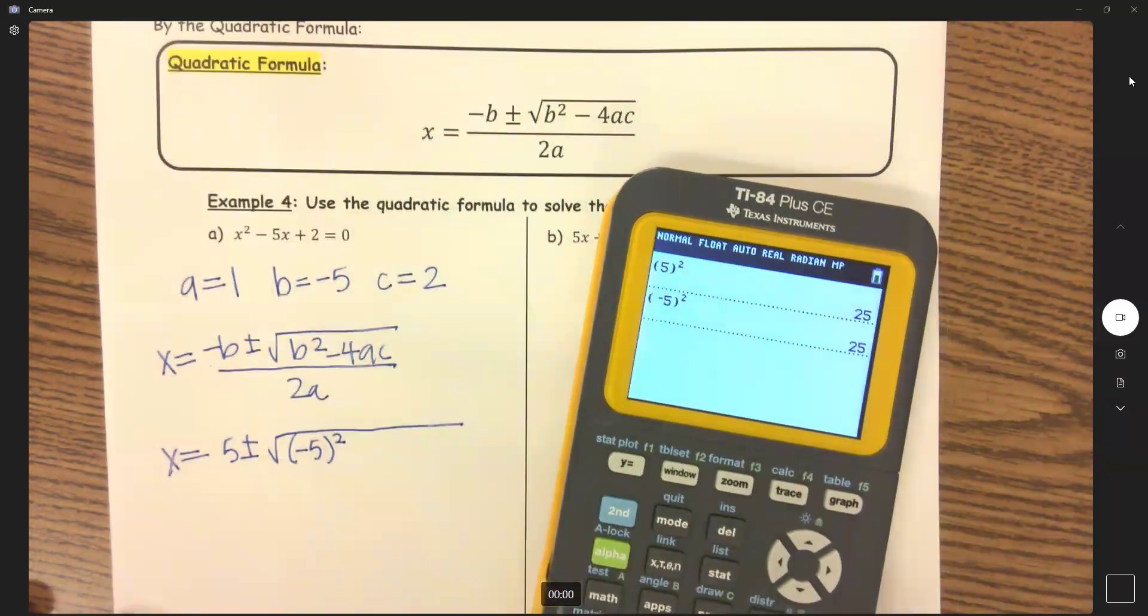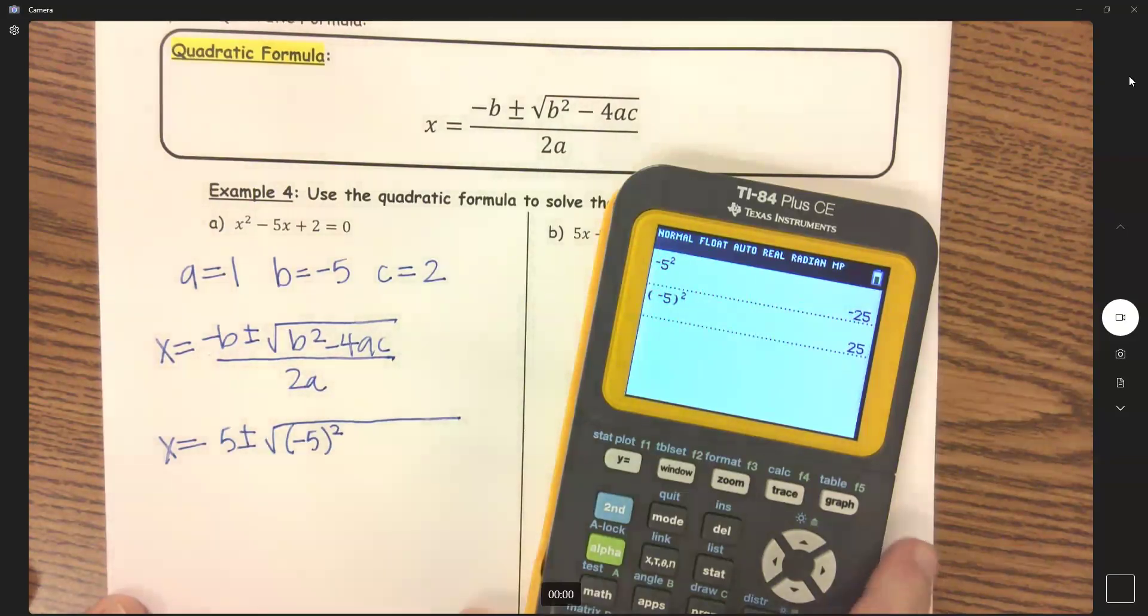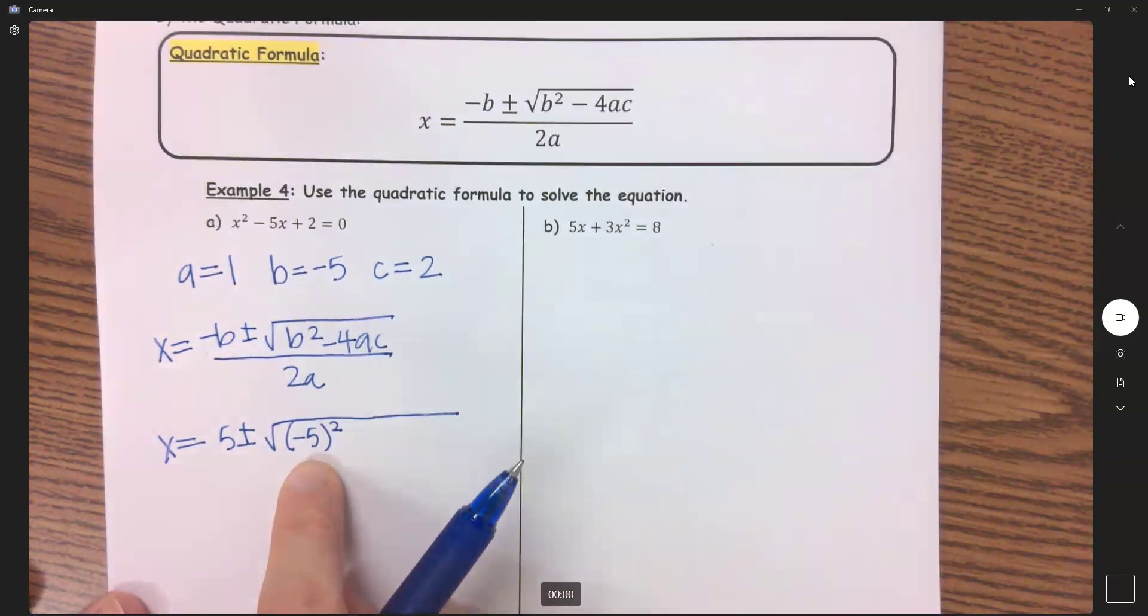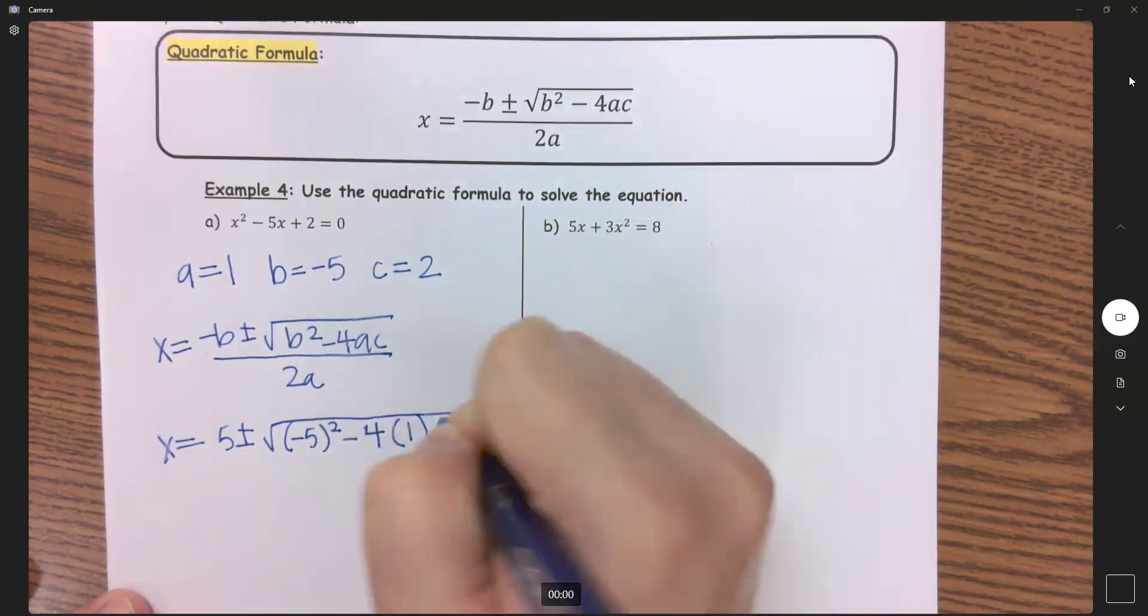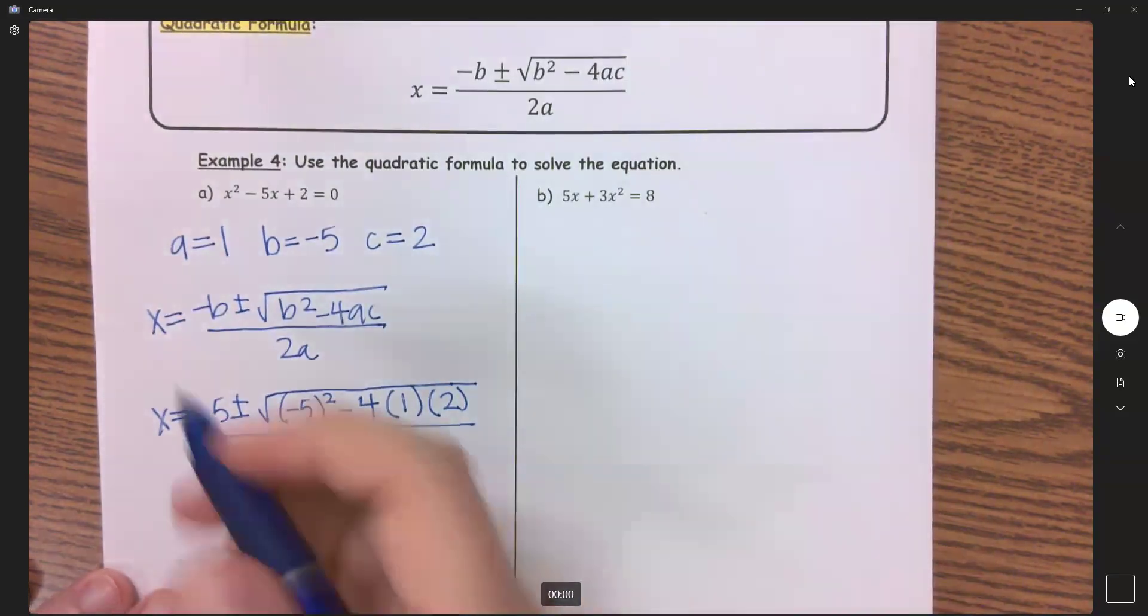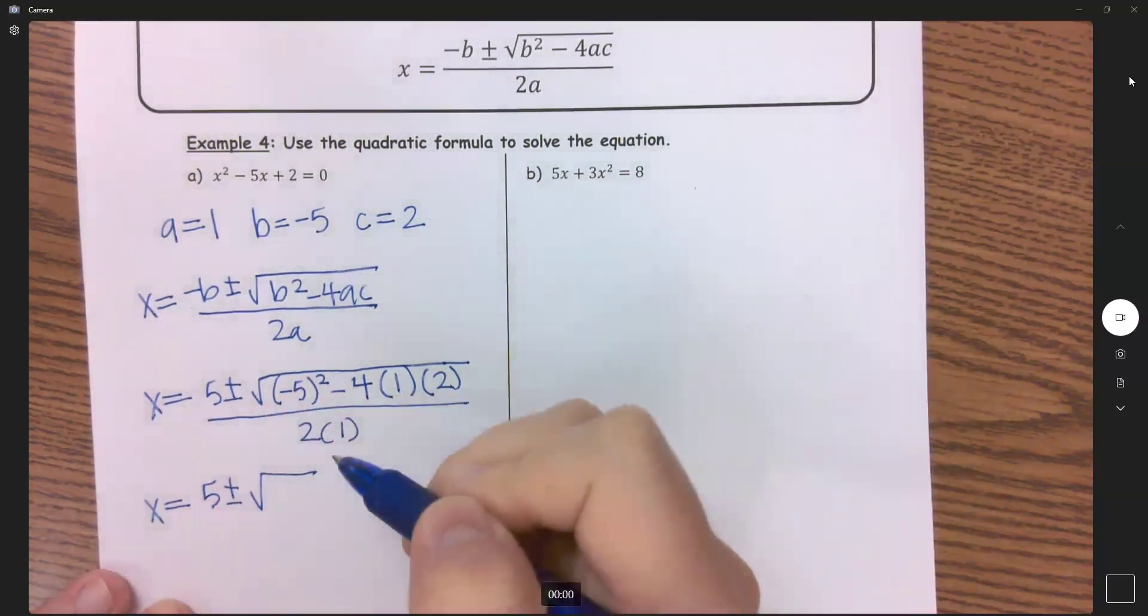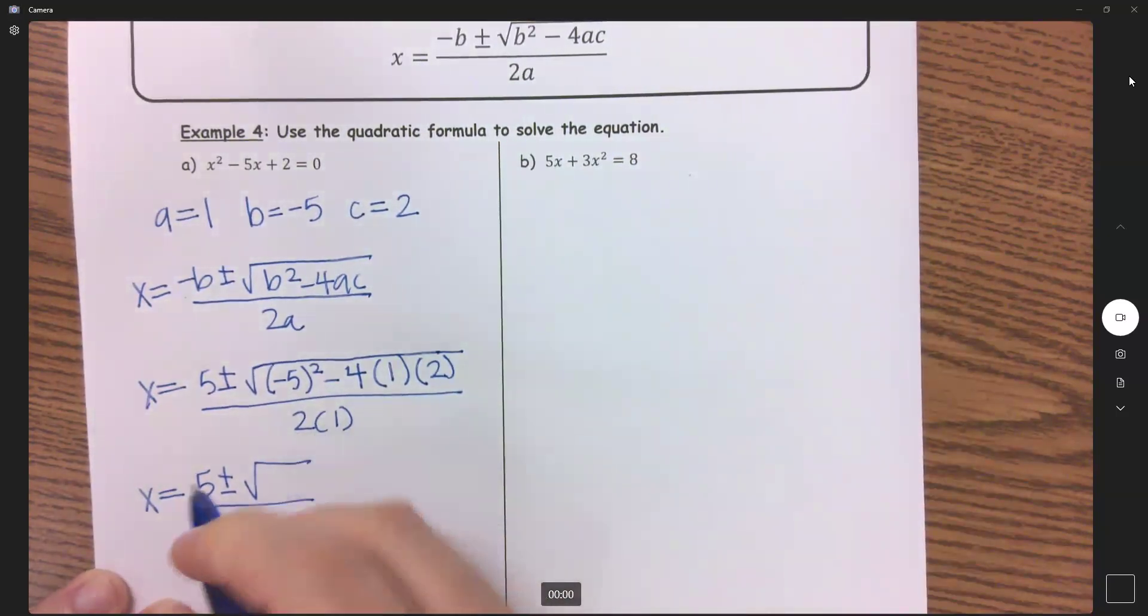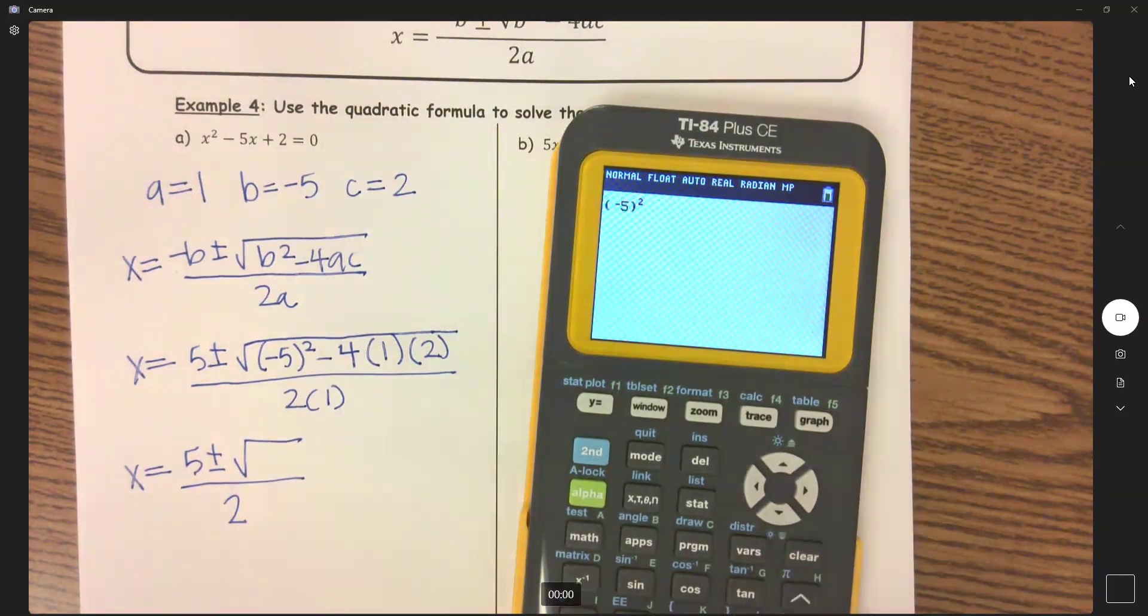But when you put it in parentheses, it's positive 25. That's going to make a huge difference to this problem. So you have to make sure you substitute in specifically negative Bs into parentheses here. But just do all of them, and you don't have to worry about when to and when not to. But minus 4 times A, which is 1, and times C, which is 2, all over 2 times A, which is still 1. So let's clean this up a little bit. We've got 5 plus or minus the square root. We'll figure out what goes under that radical. All over 2 times 1 is 2. So let's use our calculators to figure out what goes under that radical. So we have in parentheses negative 5 squared minus 4 times 1 times 2, and we get 17.